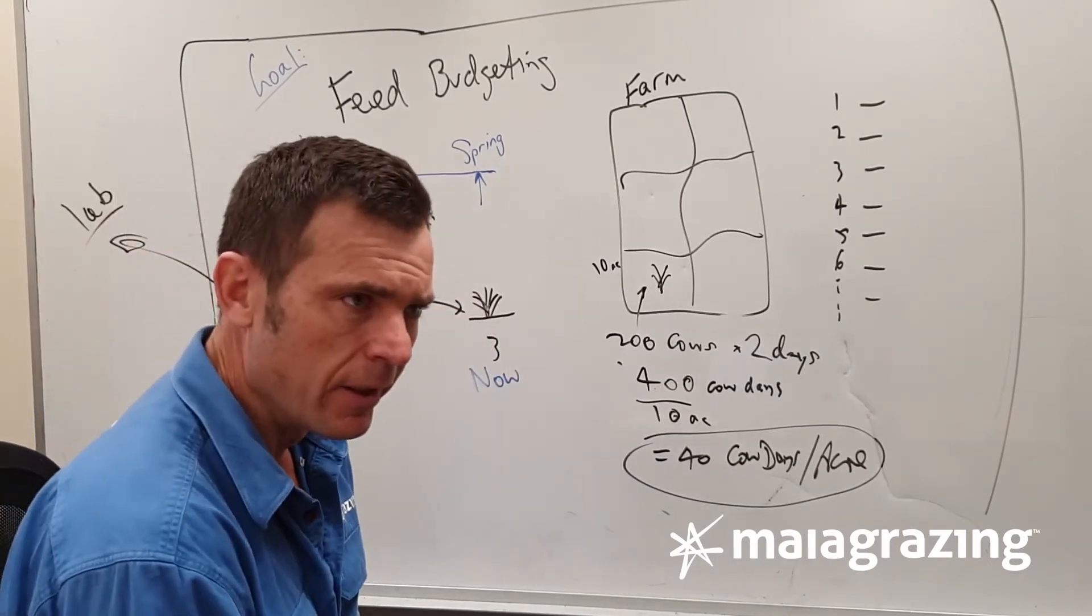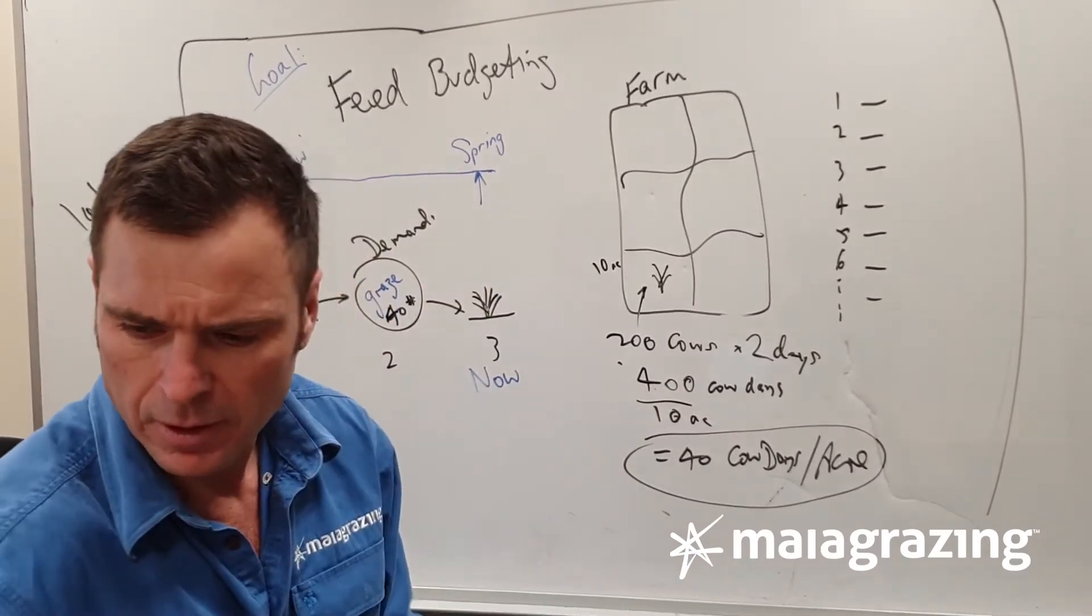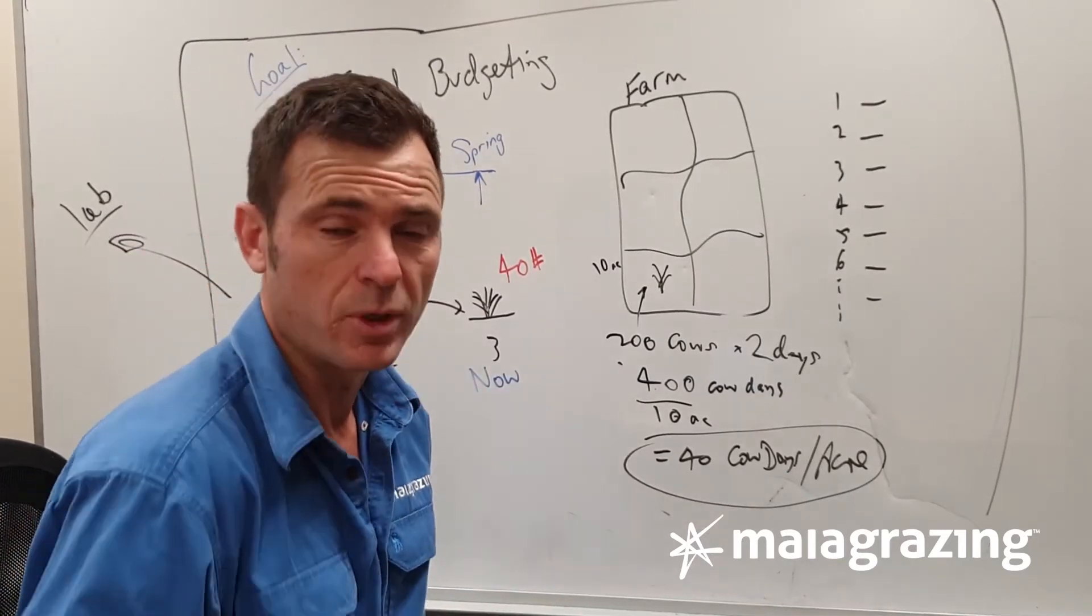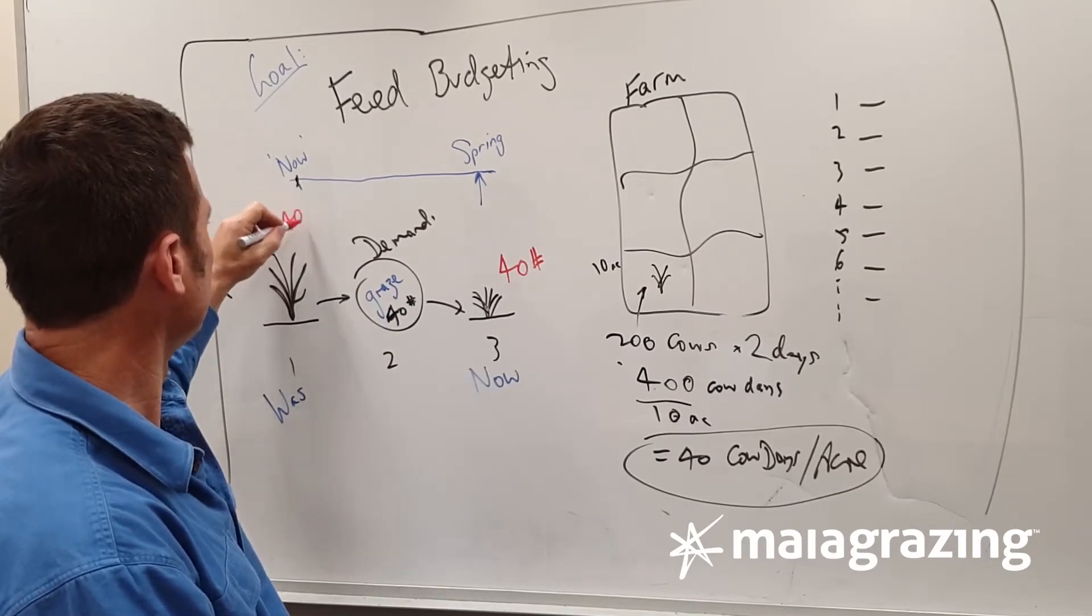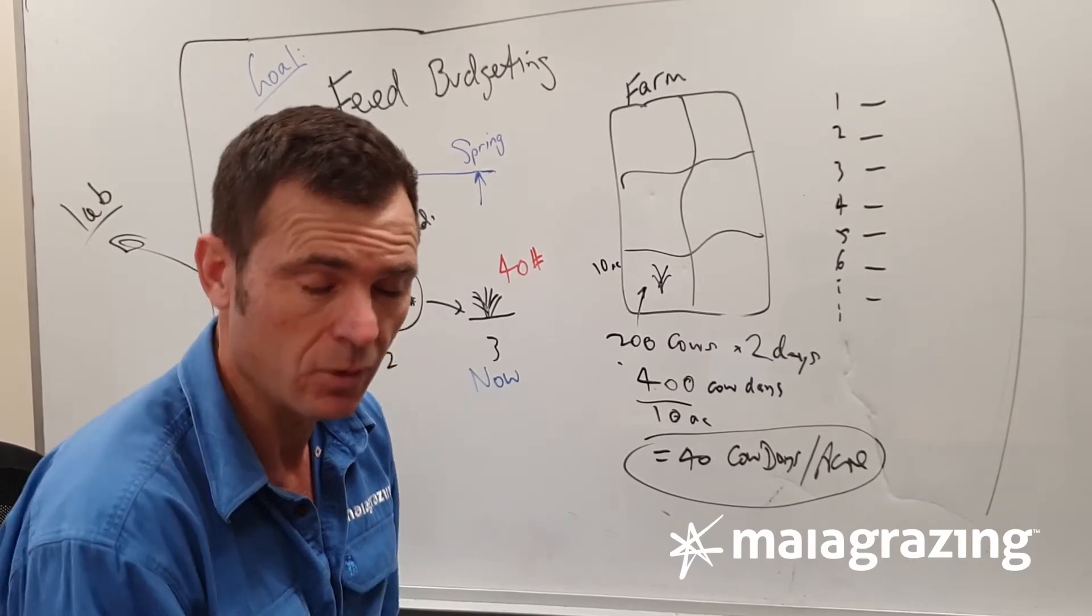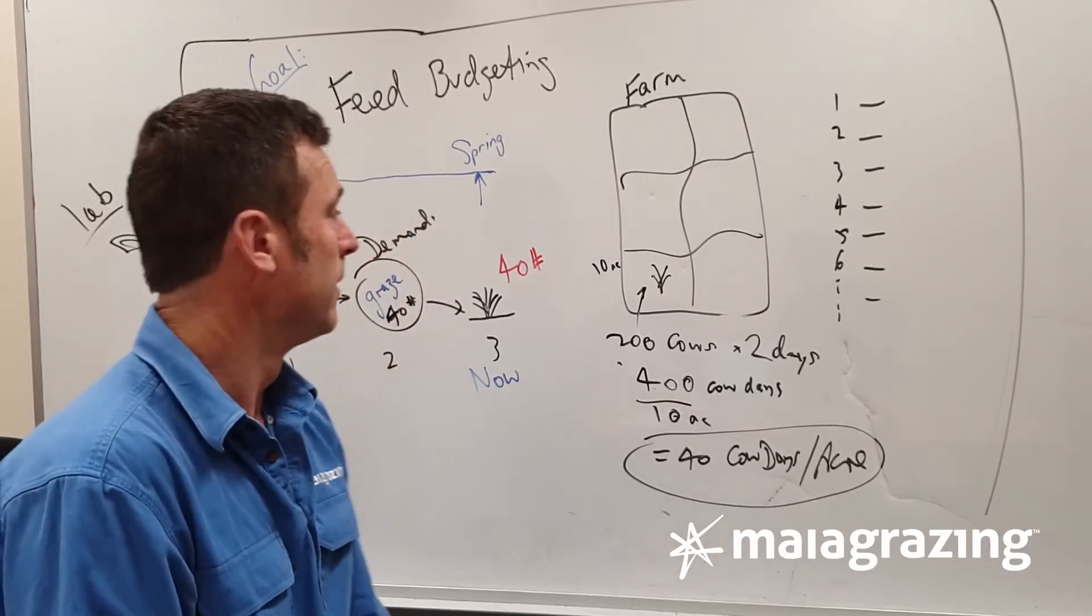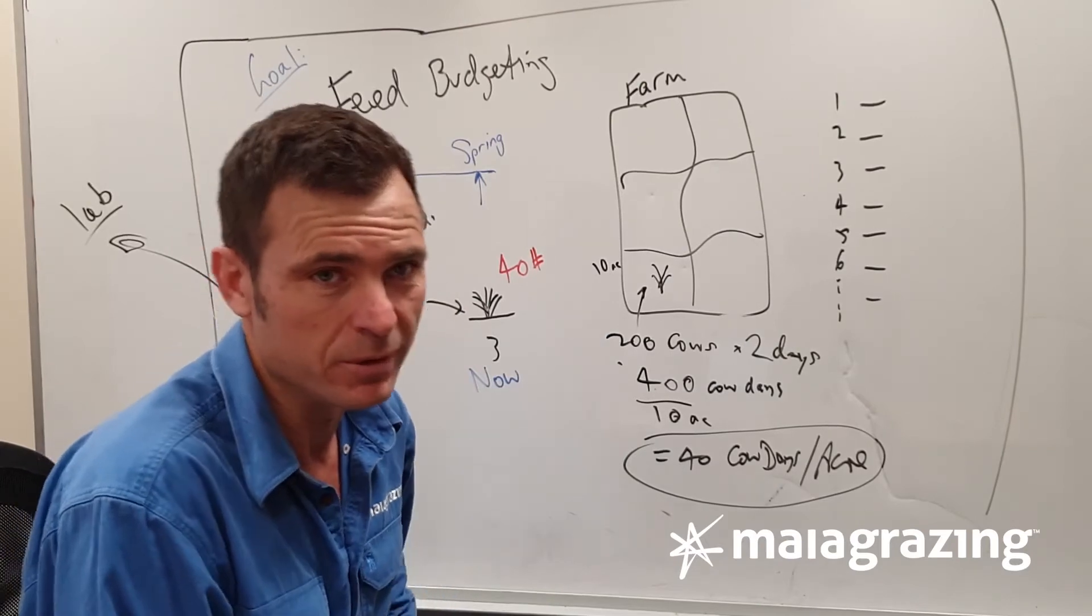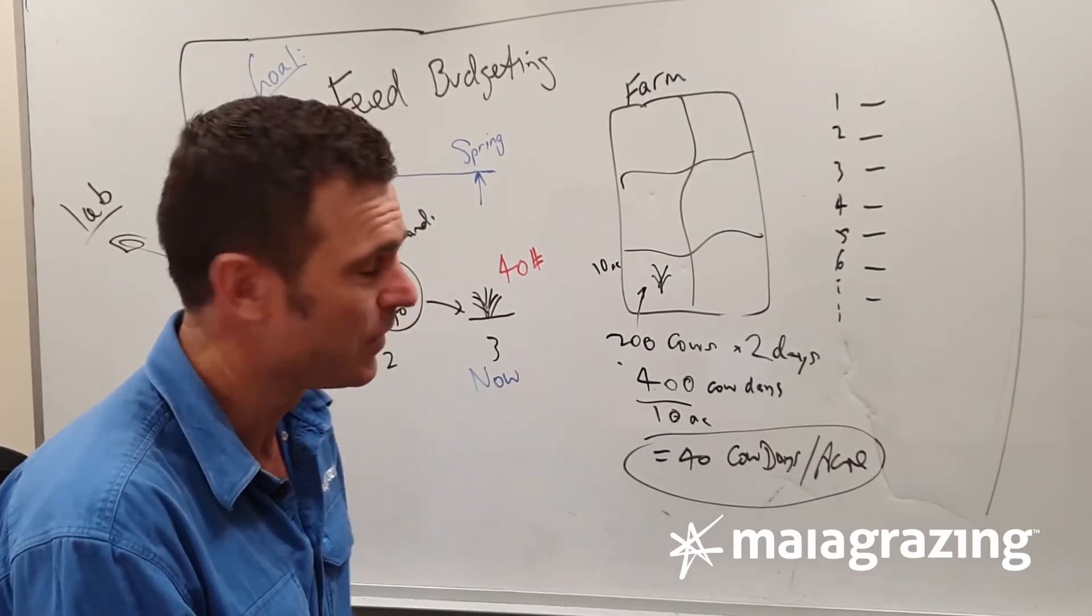So if 40 cow days per acre was consumed, and we're looking at that field right now and we're saying, look, what we took out is about what is left, therefore logically enough, we have about 40 cow days per acre left. Simple. If that's the case, what we started with is actually 80 cow days per acre. And all of a sudden, we can talk about how much forage is in that pasture and say with confidence, or maybe a little bit of confidence, that there's 80 cow days in that field before we grazed it.